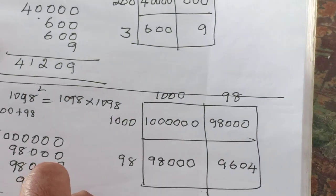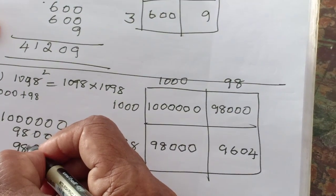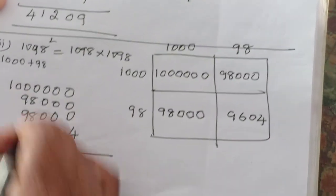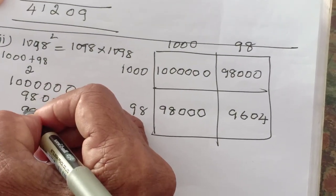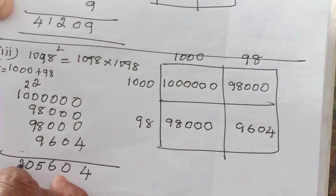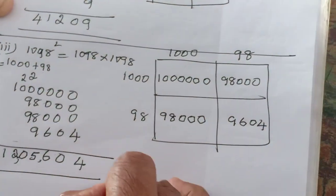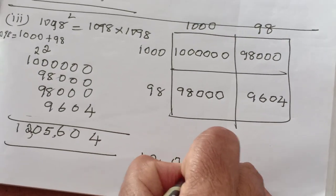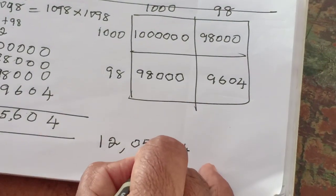So 4, 0, 6. Here 1, 8 is 8. 2, 8s are 16, 16 plus 9 is 25. So reminder 2. 2 plus 9, 11. 11 plus 9, 20. 0, reminder 2. So 2. So what is the answer? 1,205,604.